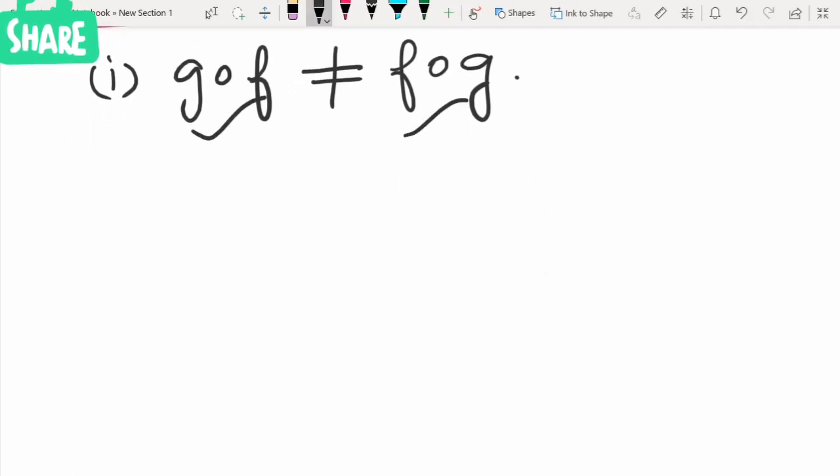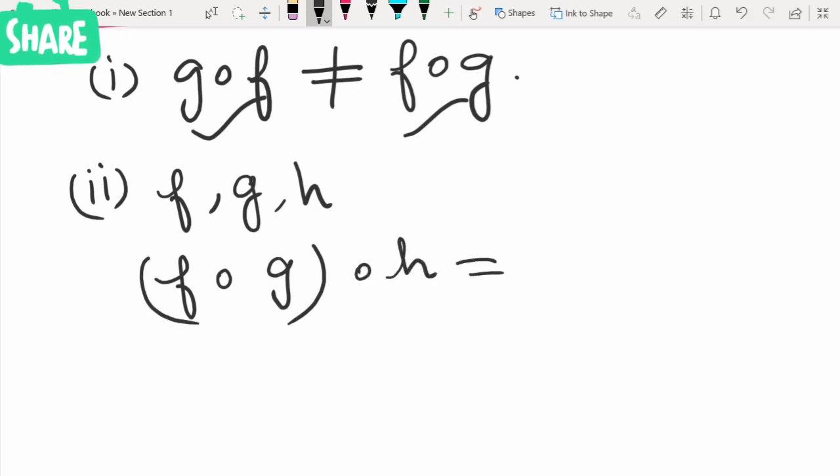The next one is the composition functions are associative. Say we have three functions f, g, and h. Then f composition g composition h will be equal to f composition g composition h.